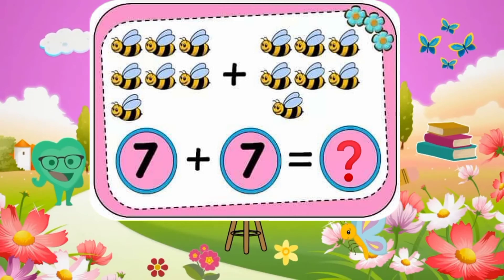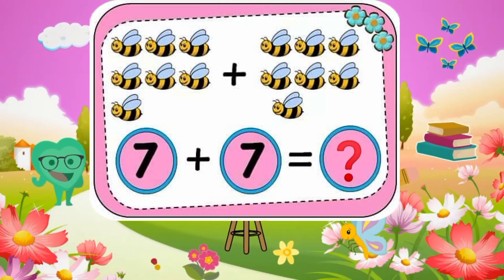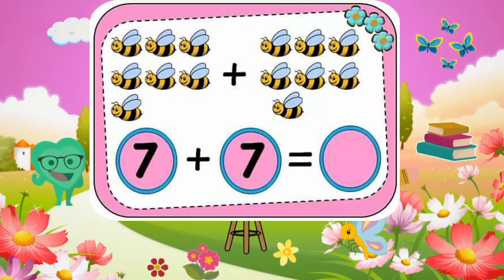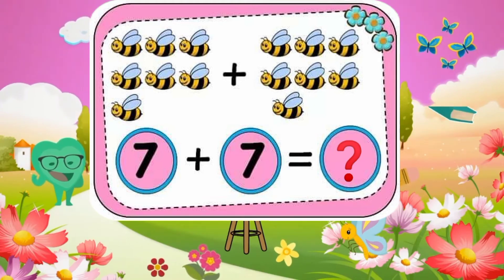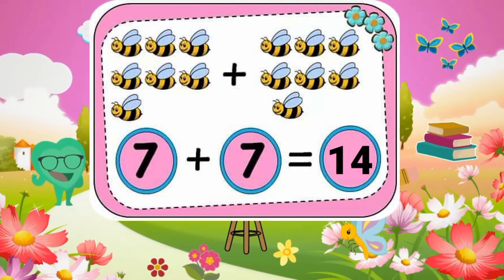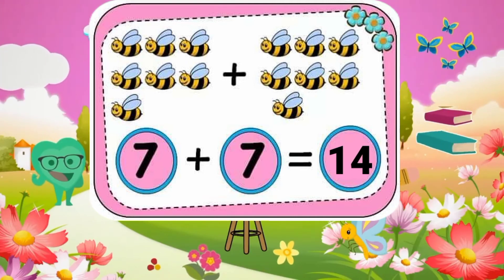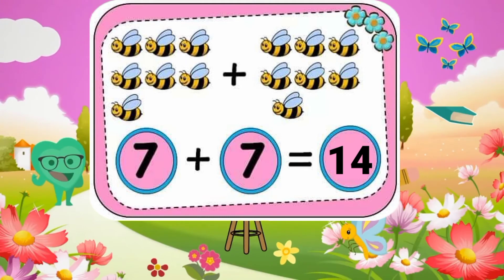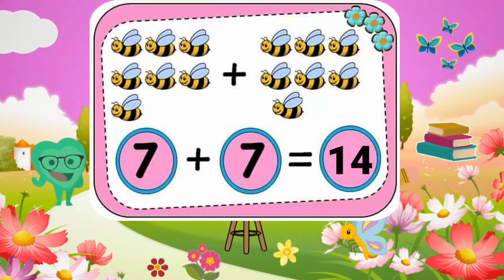7 plus 7 equals what? 7 plus 7 equals 14. Good job.